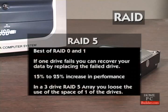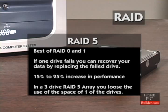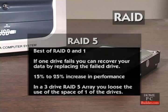RAID 5 combines the striping of data in RAID 0 with the built-in backup of RAID 1. Three or more hard drives in a RAID 5 array keeps the usable data on two-thirds of the drives' combined space, with one-third of the drive's space used as redundant or parity data. If one of the hard drives dies, it can be replaced with a new drive, and the remaining data on the other drives is used to recreate the missing data with no data loss. The performance increase over single drives is between 15% to 25%.